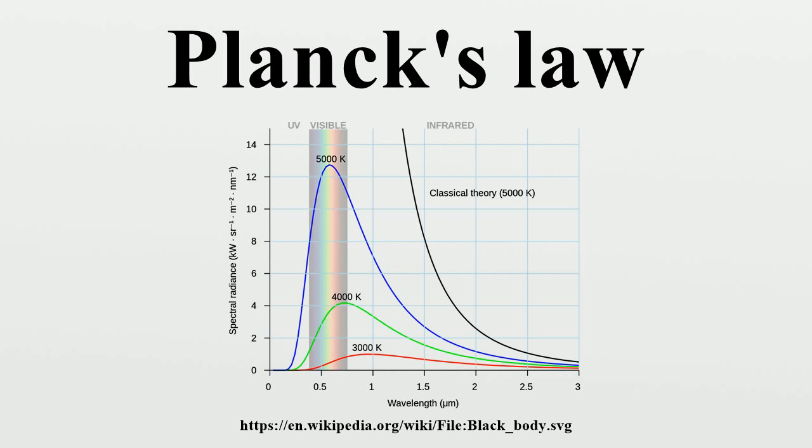To calculate the density of states we rewrite the equation as follows, where N is the norm of the vector N. For every vector N with integer components larger than or equal to zero, there are two photon states. This means that the number of photon states in a certain region of N space is twice the volume of that region.